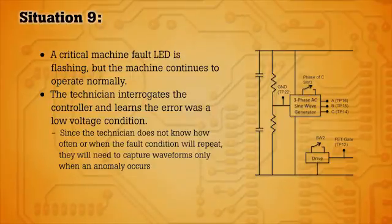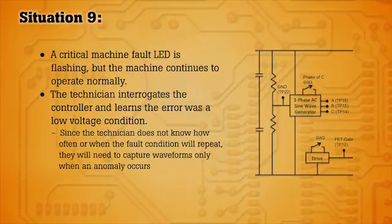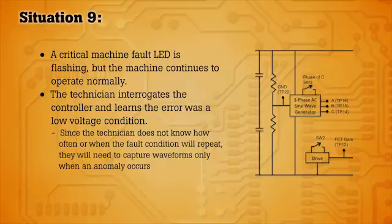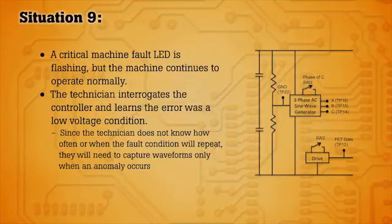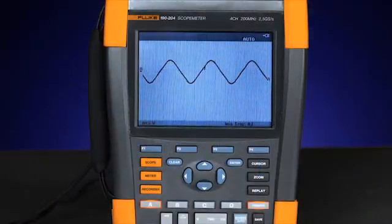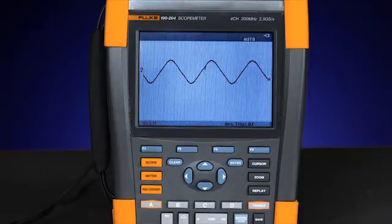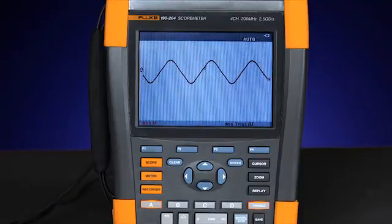This is one of the most frustrating circumstances for an engineer, these random events that cause an error but allow for otherwise normal operation. To get to the root of the problem, we're going to use the scope meter's pass-fail testing mode.